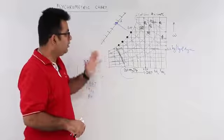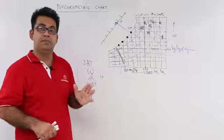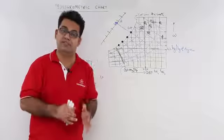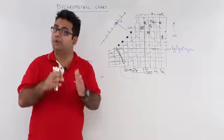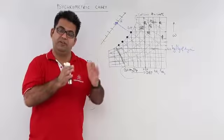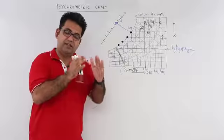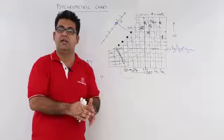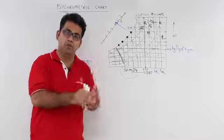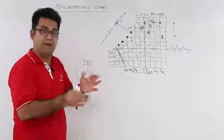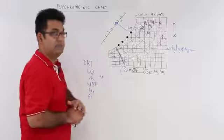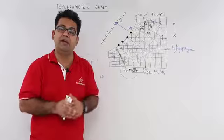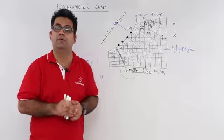In the next video onward, we'll look at some basic psychrometric processes used in numerical problems. The very first process we will look at, which makes use of this psychrometric chart, is sensible heating and sensible cooling.